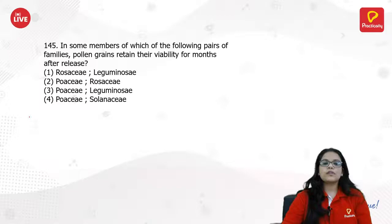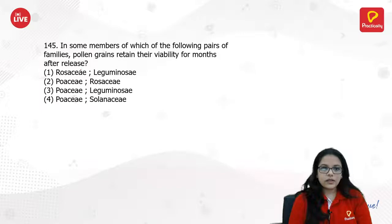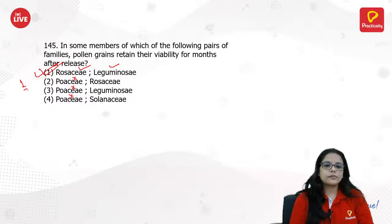In some members of which of the following pairs of families do pollen grains retain their viability for months? The answer is option 1.